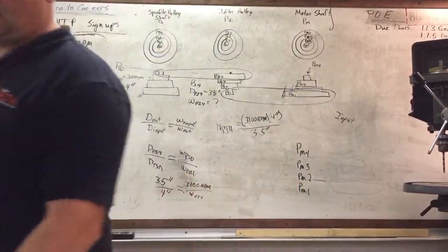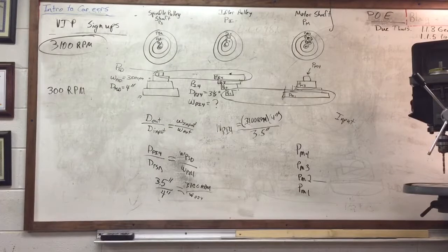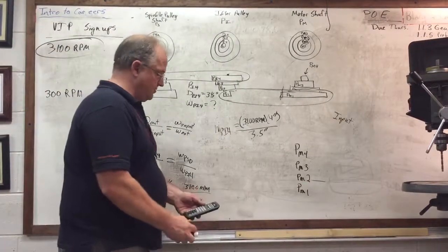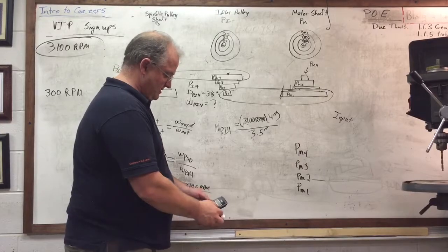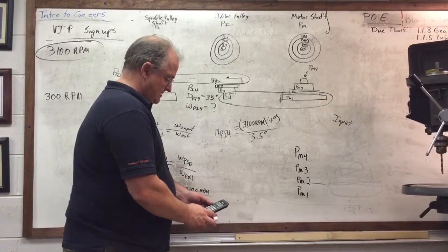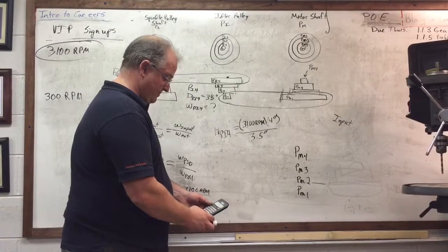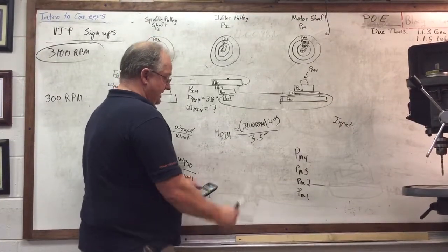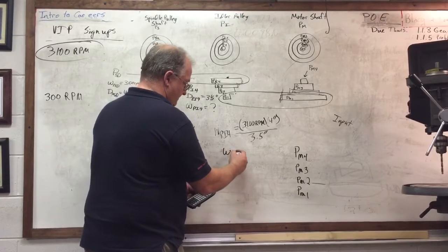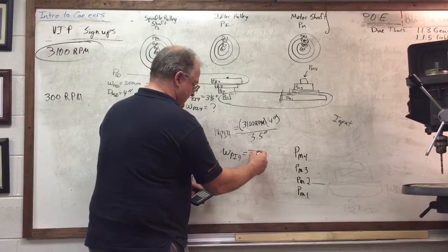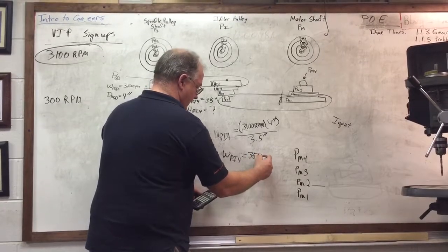So let's get my calculator real quick so I can do this. So 3100 times 4 divided by 3.5. We get a wpi4 of 3,543.